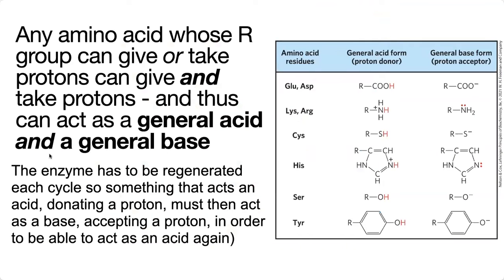Remember that the enzyme, in order to keep doing things over and over again — speeding up reactions without getting used up — that's the definition of what an enzyme does. In order to do that, it needs to be able to reset. So if it gives a proton, it has to be able to take a proton in order to be able to give a proton again.